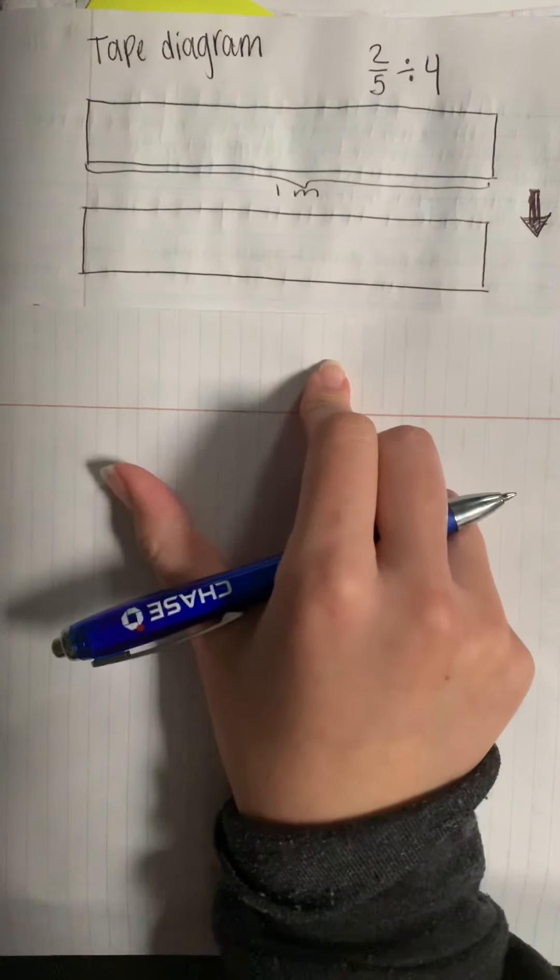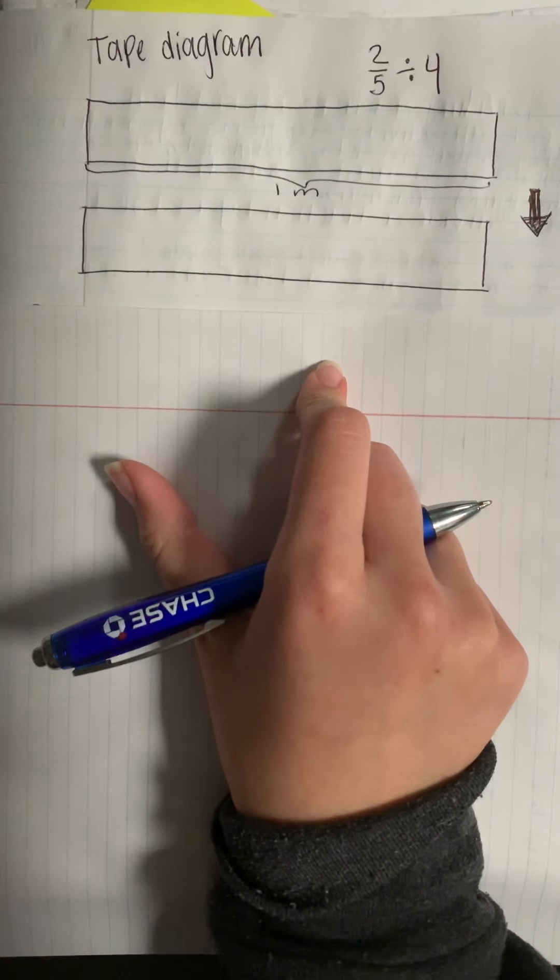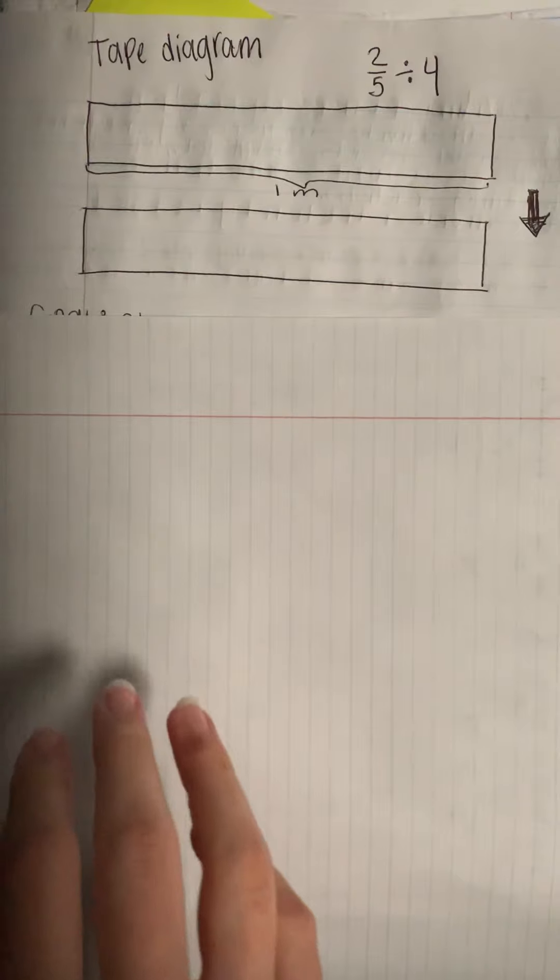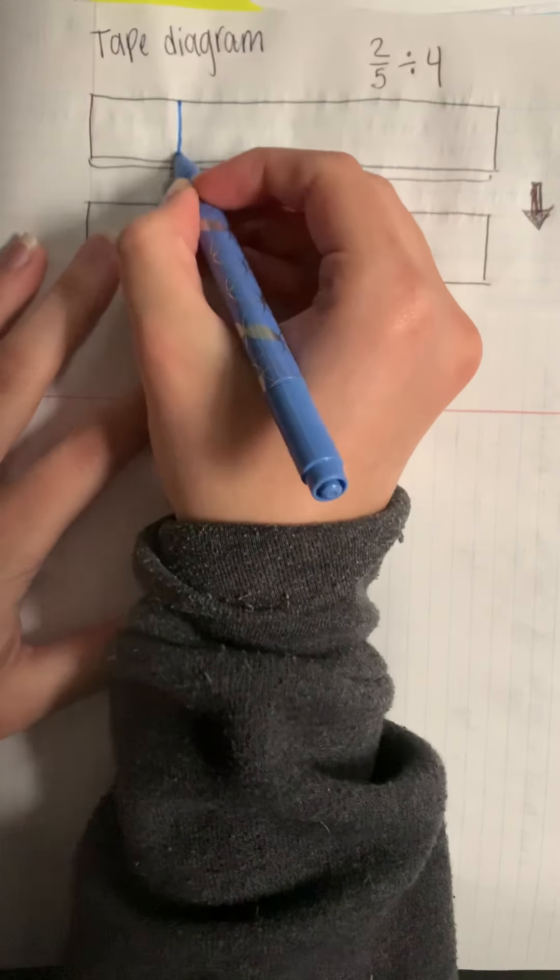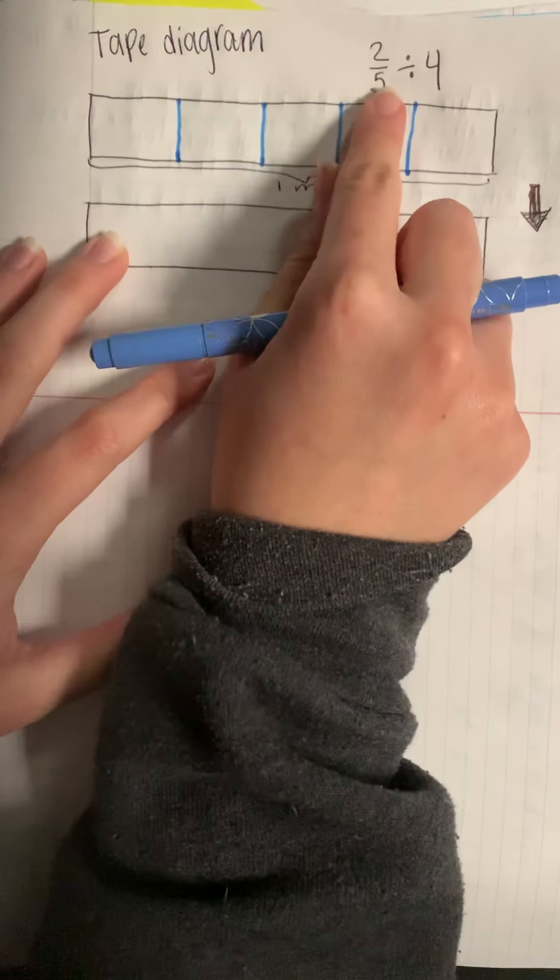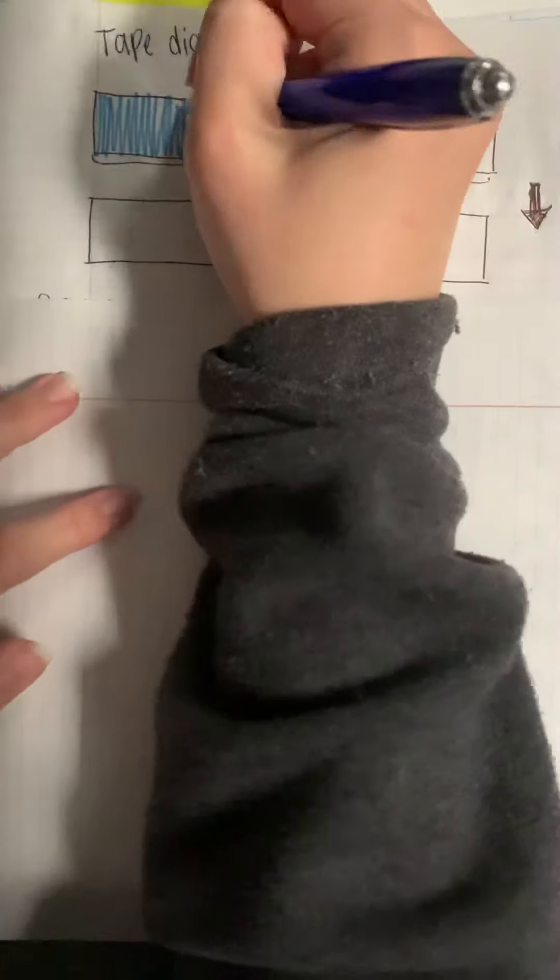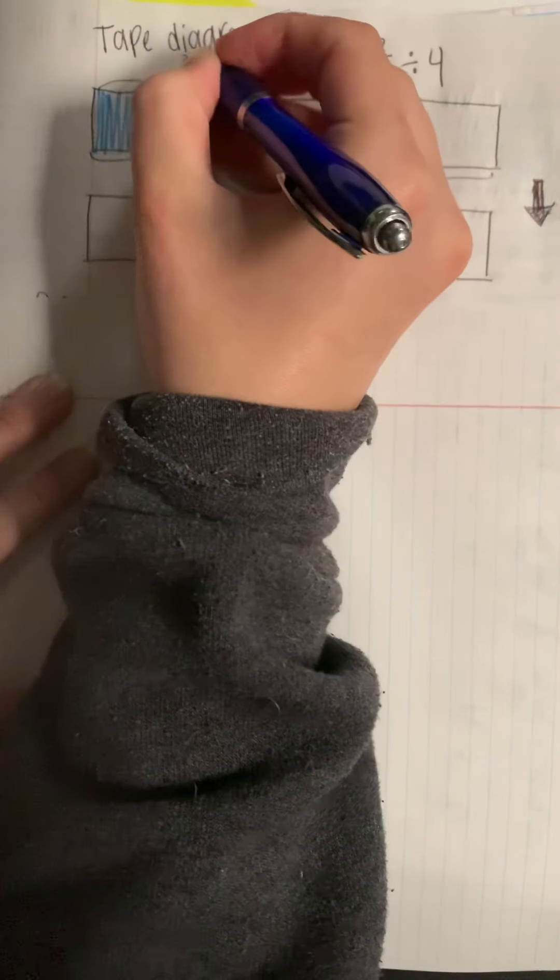So we drew our tape diagram. The length of the rope is cut into four equal cords and we can show that in our models by partitioning our two-fifths into four. So let's start by showing those two-fifths. This is one entire meter and that would be five out of five. One, two, three, four, five. I need to show two-fifths for two out of those five pieces. Okay, so there they are. And I can also label it so it's super clear. Two-fifths.